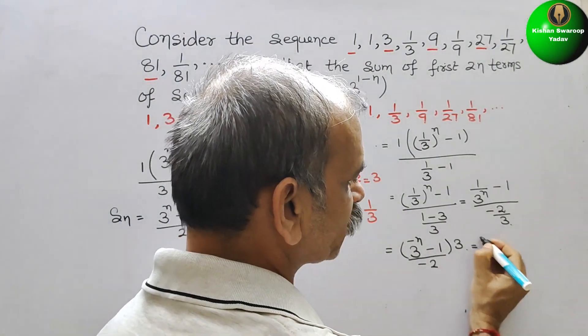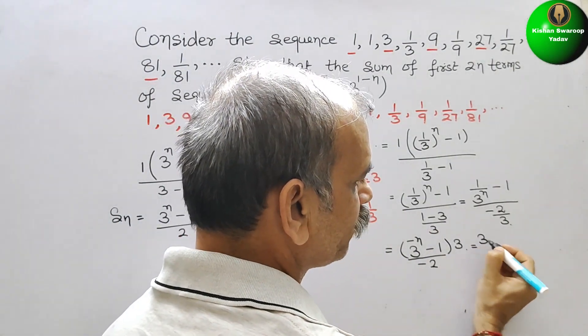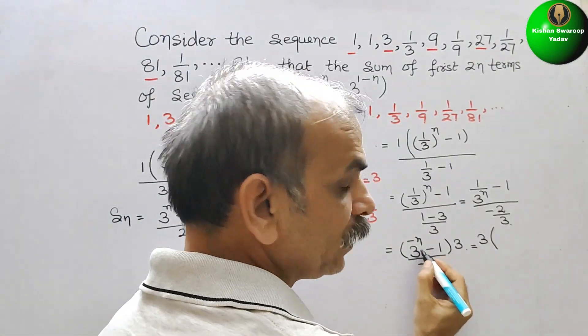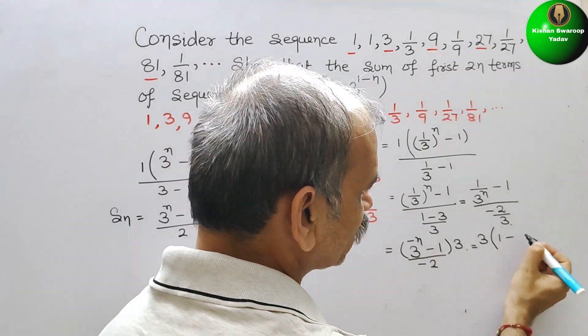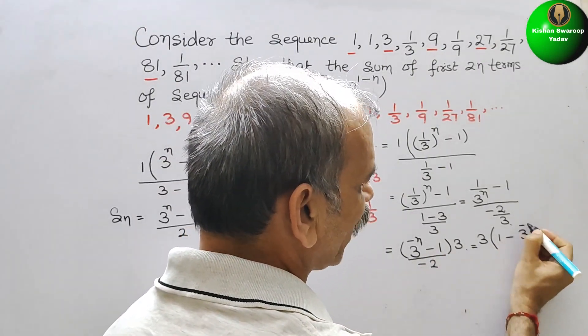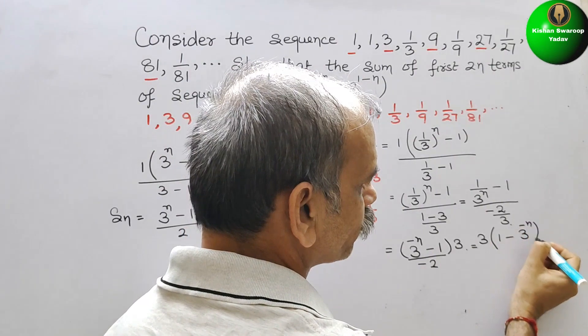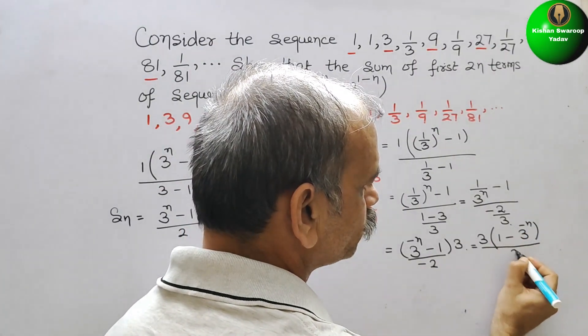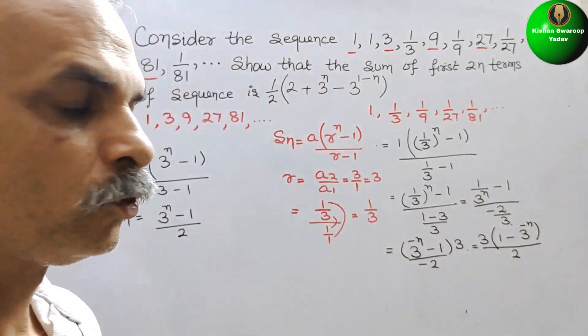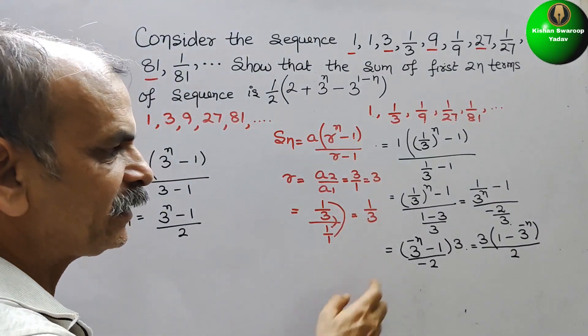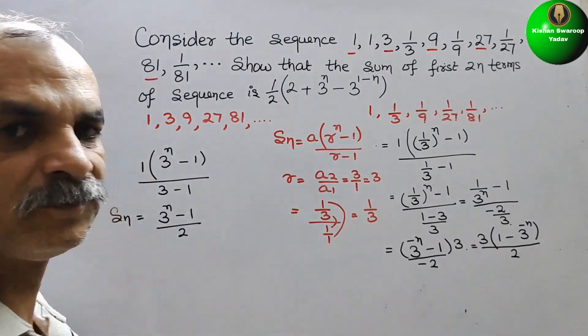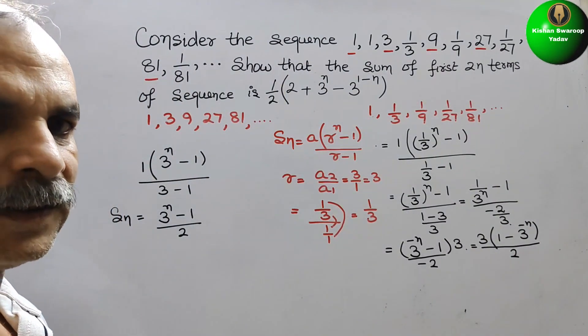Therefore, we will write it as 3. This 3 will come up as (1 - 3^(-n))/2. So this is first S_n. This is your second S_n.